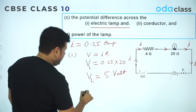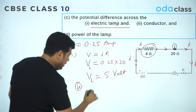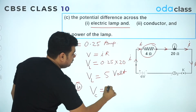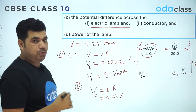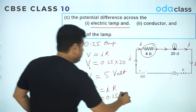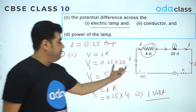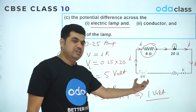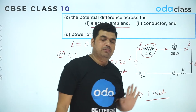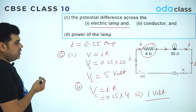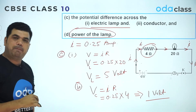The second sub-part of part (c) is the potential difference across the conductor. Using V = IR again: V_conductor = 0.25 × 4 = 1 volt. So the total 6 volts from the battery is distributed as 5 volts across the lamp and 1 volt across the conductor.